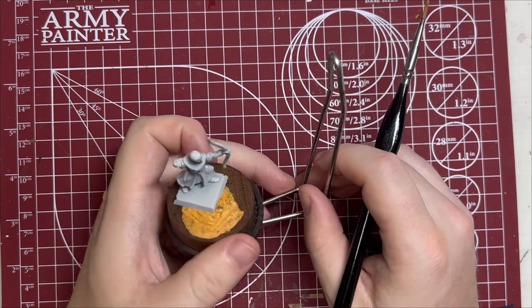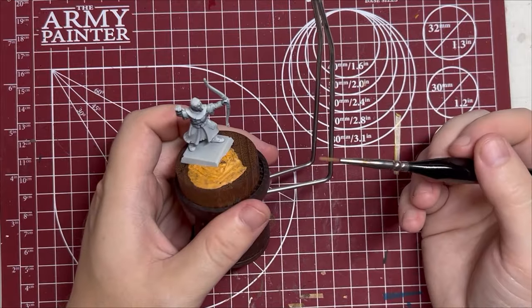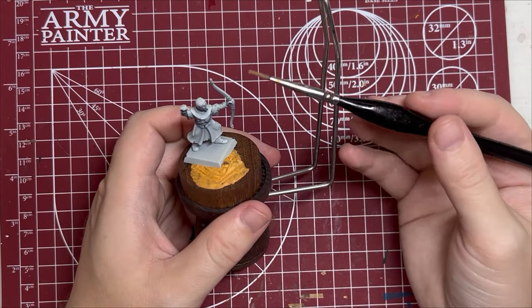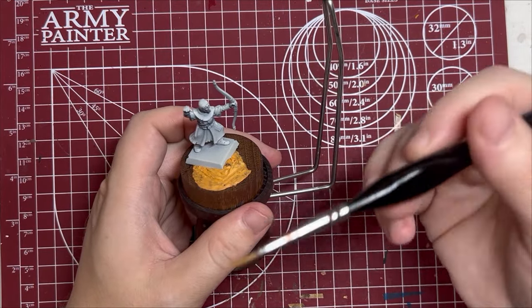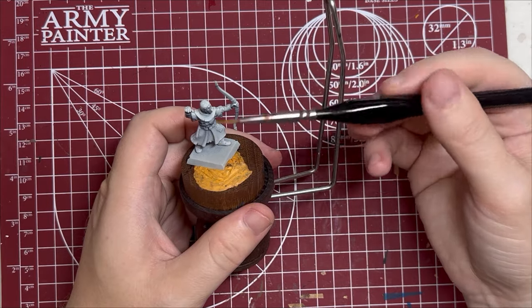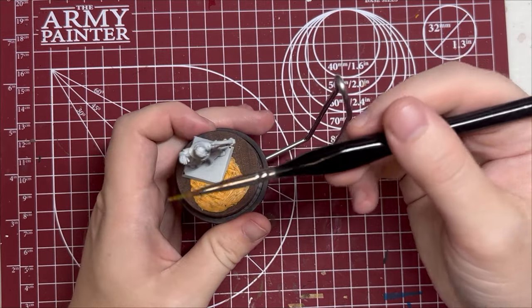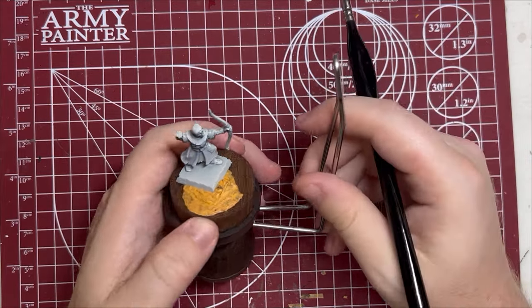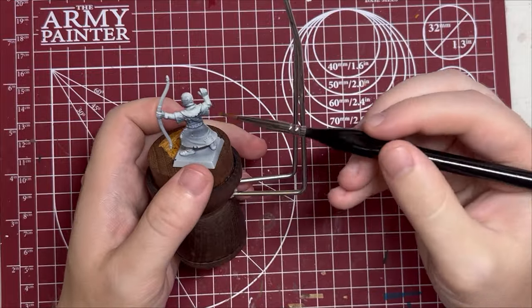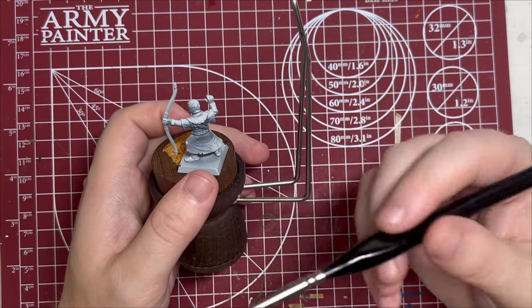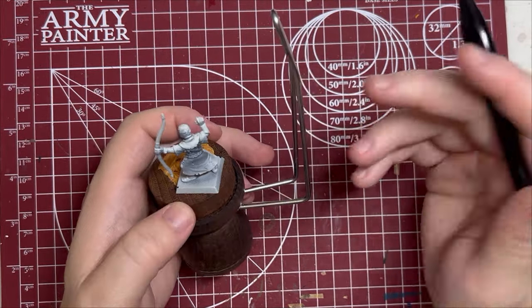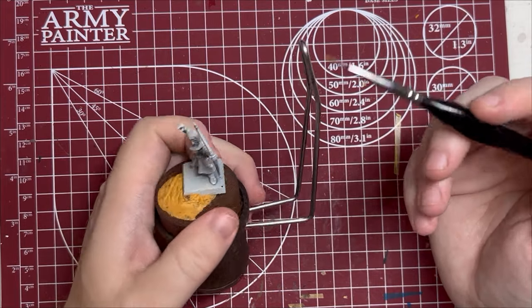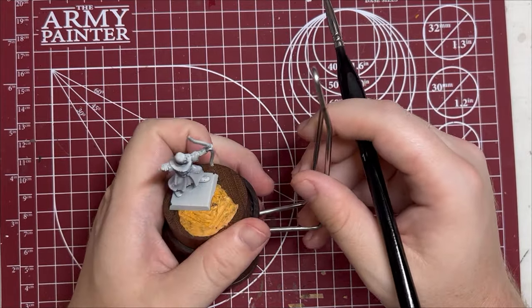Which means I'm going to do some zenithal priming which I've already done from this model. Start by priming him all the way black, then at a more upward angle I did a Grey Seer spray paint, and then finally from the top I did Wraith Bone. So this gives me layers to the undercoating. You can see I have dark areas, I have light areas, and then when I paint over this with the contrast paints these are going to bleed through and a lot of the highlighting work has been done for me.